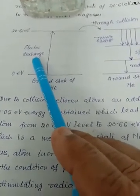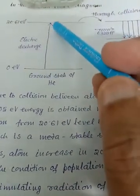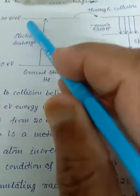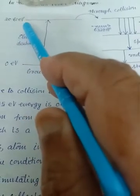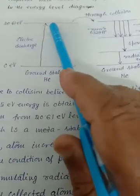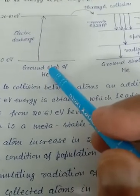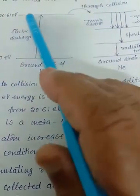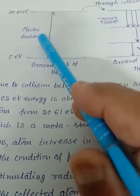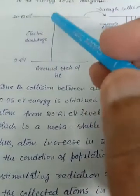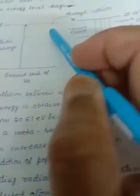Through the electric discharge, sufficient energy is obtained that it is absorbed by helium, and helium is excited to its excited state. By the way, this excited state is a metastable state. You may wonder how helium has a metastable state — it comes through impurity. The helium we take has some impurity, and due to that impurity a metastable state exists with an energy value of 20.61 electron volts. Through the electric discharge, the helium atom absorbs that energy and gets excited, reaching its excited state at 20.61 electron volts.